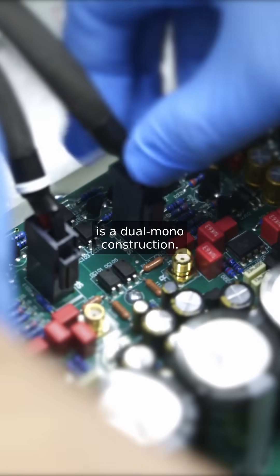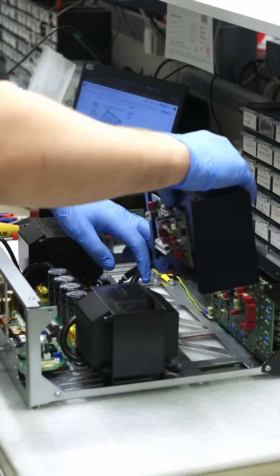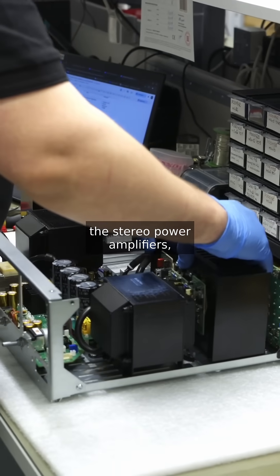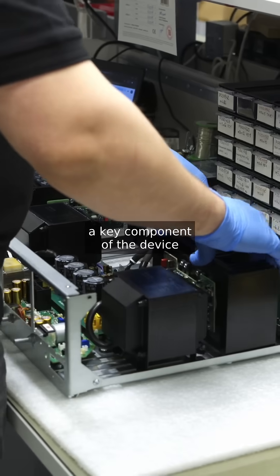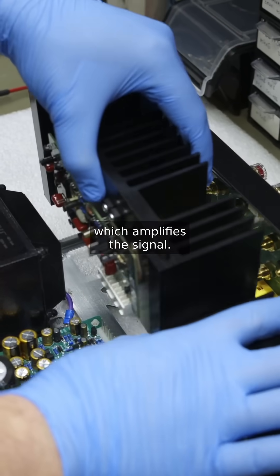What we can see here is a dual mono construction. Here we can see the stereo power amplifiers, a key component of the device which amplifies the signal.